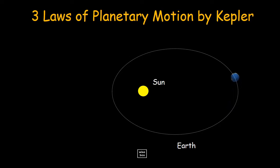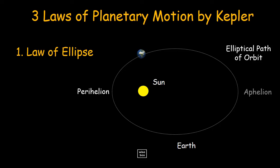Here are the three laws of planetary motion by Kepler. First is the law of ellipses. The orbit of the planets is an ellipse with the Sun at one of the foci of the ellipse. The closest point to the Sun in a planet's orbit is the perihelion. The farthest point is called the aphelion.